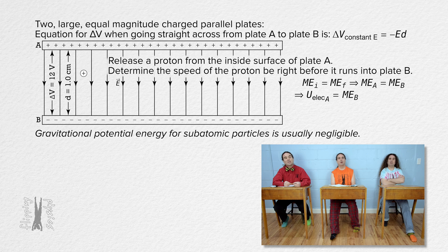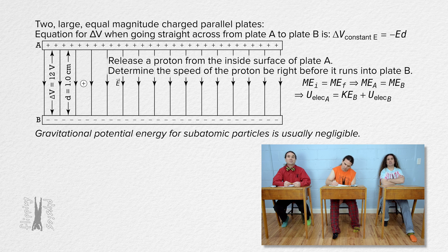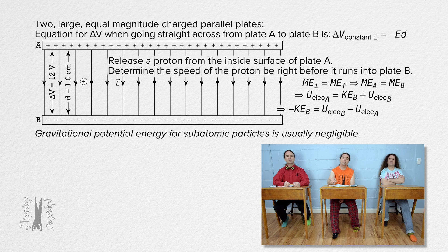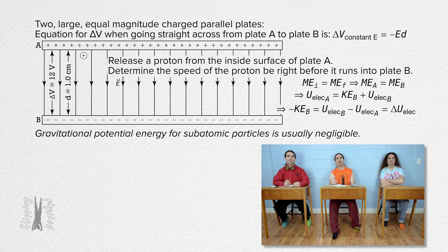At plate B, the proton has kinetic energy and electric potential energy. Subtract electric potential energy at A and kinetic energy at B from the whole equation. On the right-hand side, that equals the change in electric potential energy.